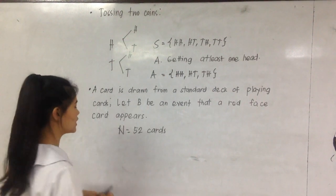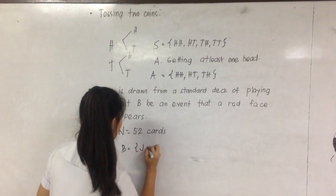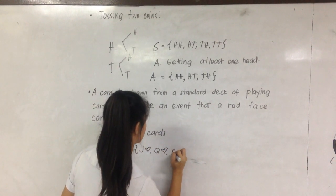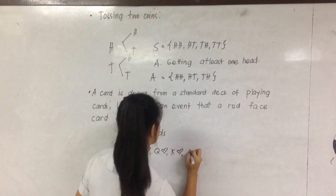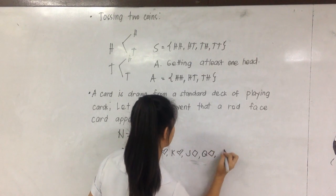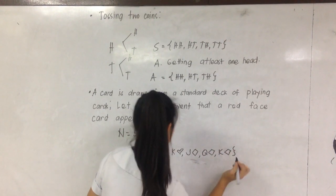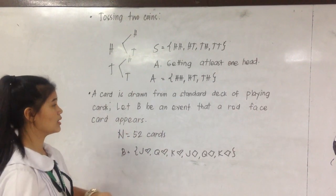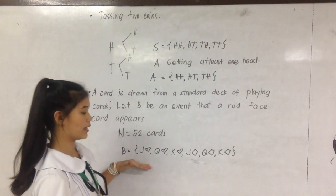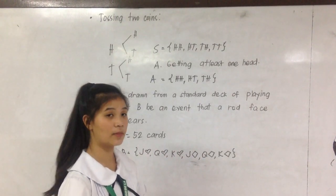In the standard deck of playing cards, there are only 6 red face cards. That could be jack of hearts, queen of hearts, king of hearts, jack of diamonds, queen of diamonds, and king of diamonds.